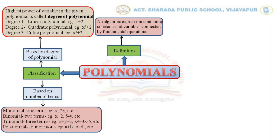Four or more terms is simply called a polynomial — example, a plus b plus c plus d, etc. Note that here we are not considering the power of the variable; we are only considering how many terms there are. So, depending on the terms, polynomials are classified as monomial, binomial, trinomial, or polynomial. And depending on the degree, a polynomial is classified as linear, quadratic, cubic, and so on.